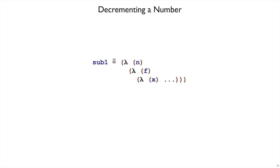Finally, let's look at subtraction. So sub1 is going to be similar to add1. It takes a number and it returns a number. So it's returning a lambda f lambda x something. Our job is to apply f to x n minus 1 times. And we could try the same strategy we tried for add1, which was to first apply at n times.